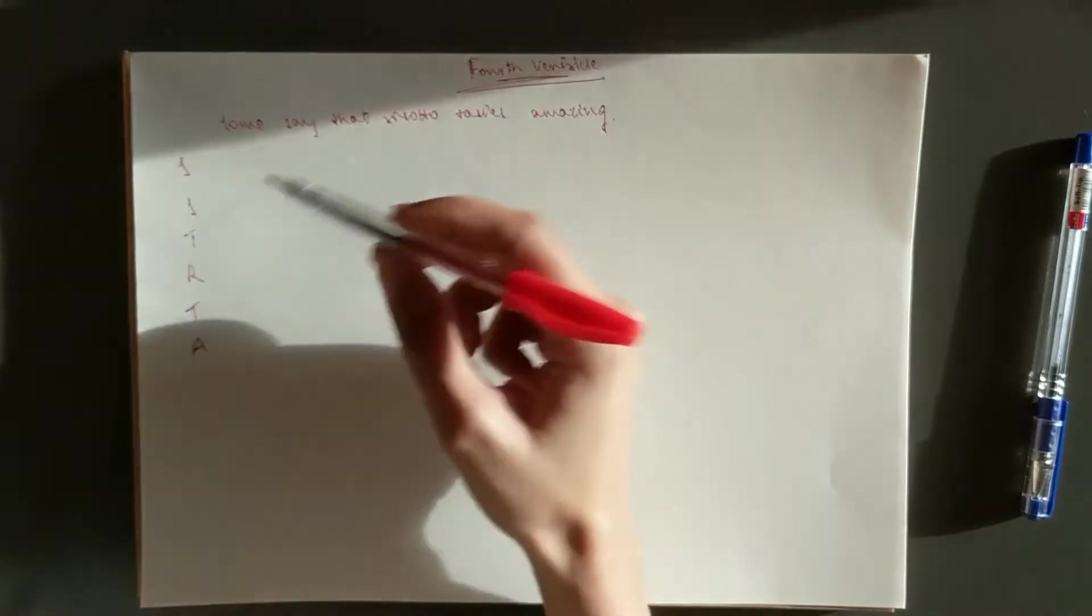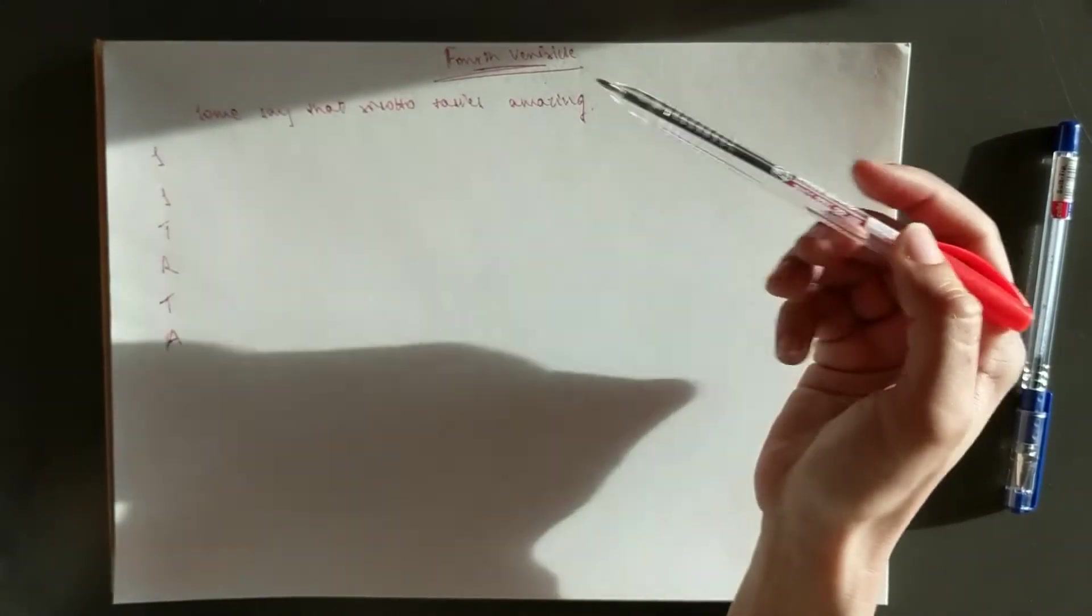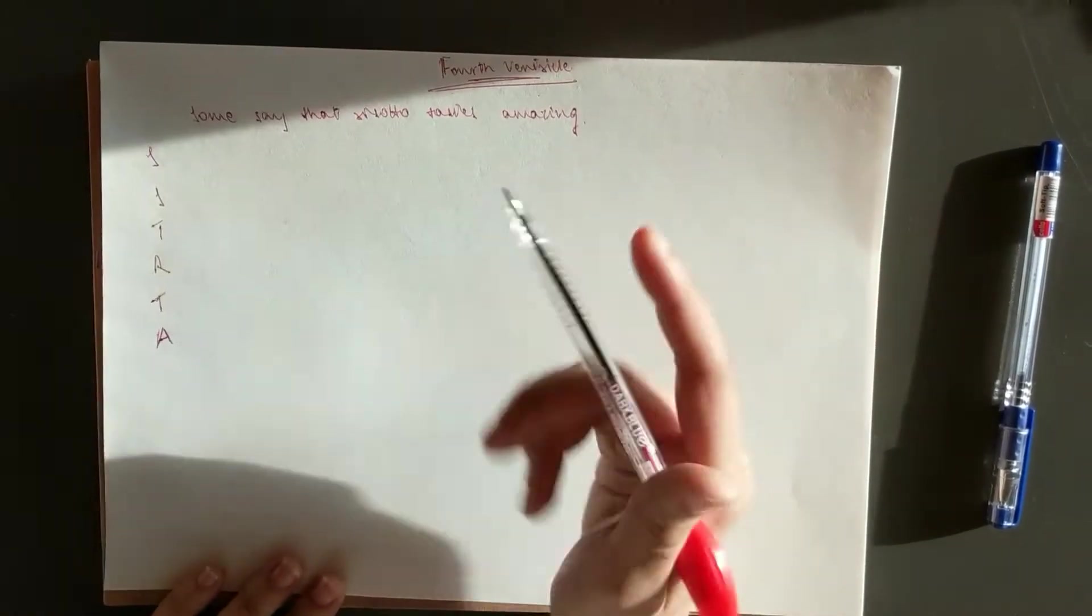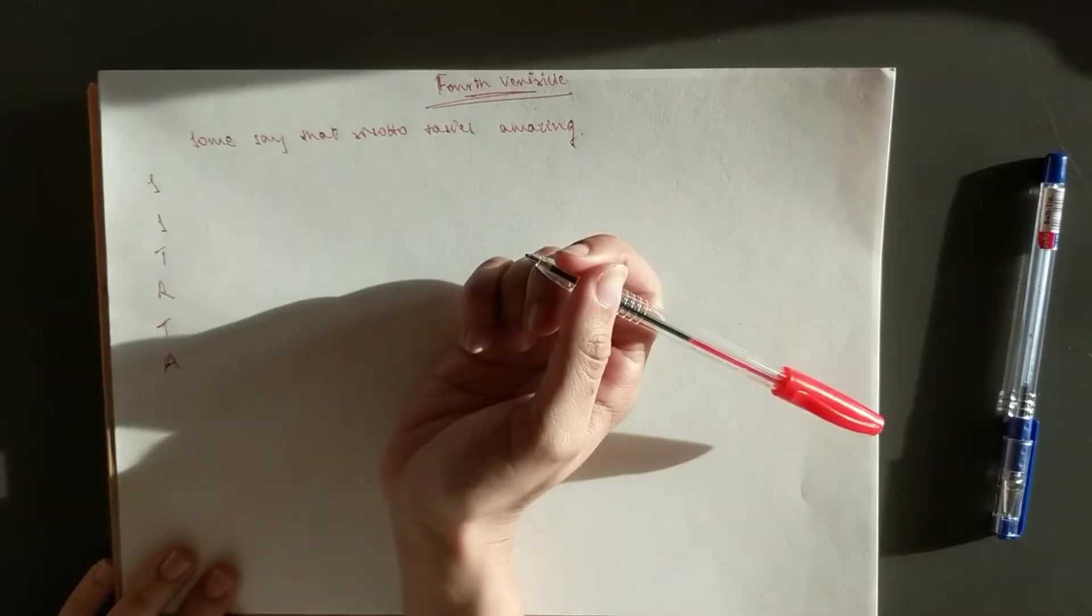Before we move on, I'd like to tell you that for the ventricles you need to know the roof, the lateral walls, the floor and basically the borders. So we'll start with...